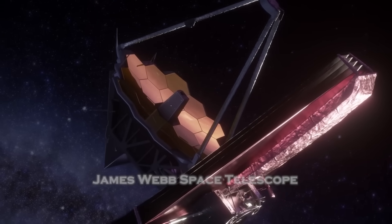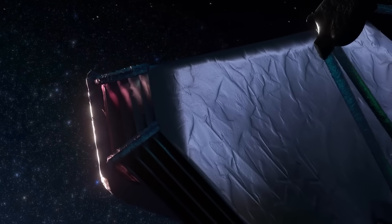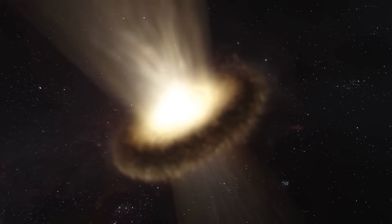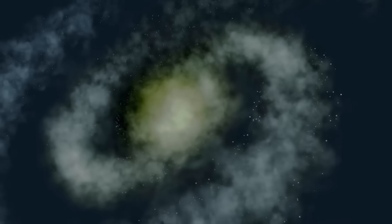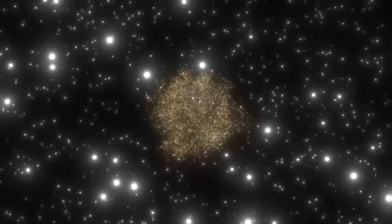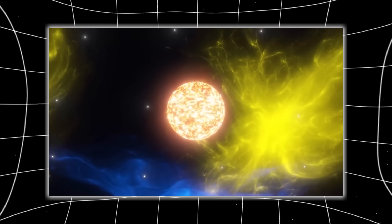When the James Webb Space Telescope first opened its golden mirrors to the dark, it was meant to show us the beginning of time, the light from the first galaxies, the birth of stars, the echoes of creation. But a few months ago, as it scanned the edges of the known universe, it detected something no one was prepared for: a signal, not radio, not light, but something else.